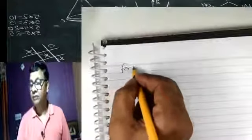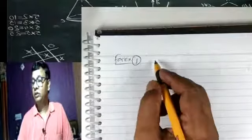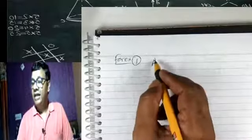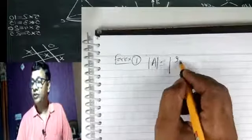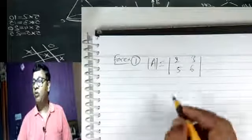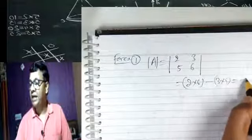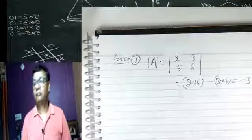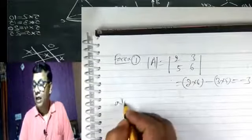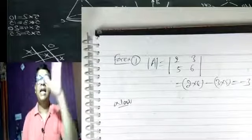Example: ek determinant |2, 3; 5, 6| hai. Iska value: 2×6 − 3×5 = 12 − 15 = −3. Ab hum is property ko judge karte hain — R1 ko 2 se multiply karte hain. R1 into 2 — naye determinant mein substitute kar dete hain.